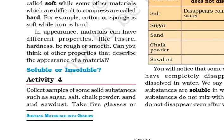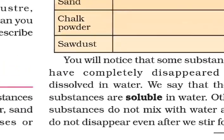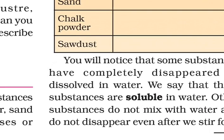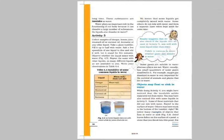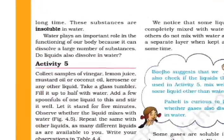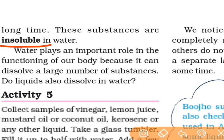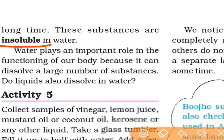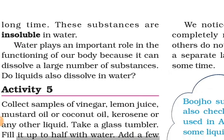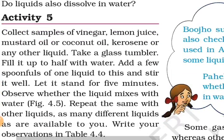Another property is soluble or insoluble. If a material dissolves, we say it is soluble. If it does not dissolve — for example, if it forms a solid layer — the surface is insoluble. So insoluble is another kind of property.